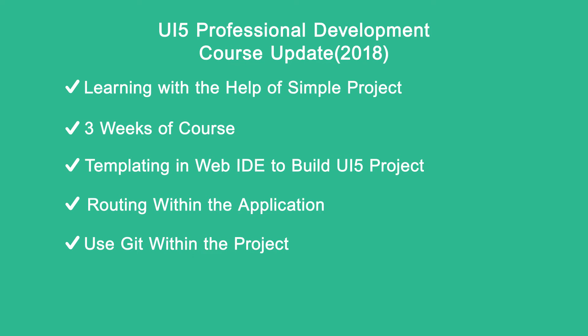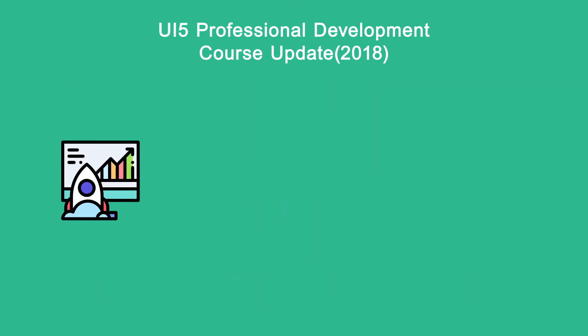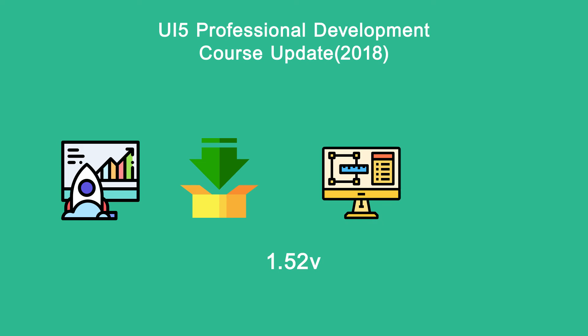We would be building this project — Core UI — as part of our project-based learning within this course, using multiple global data models with data binding. This is a complete, fully fledged development of a project with the new updates of the UI5 library. We will be using components majorly from version 1.52, which make the application much more user-friendly and good-looking. The complexity within this course is going to be high.